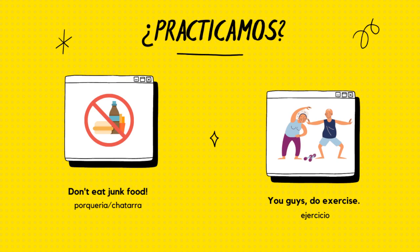Practicamos! Here I have two examples for you to try. The first one says: Don't eat junk food — and I have two words that could be substituted for junk food: porquería or chatarra. The second example is: You guys do exercise. Ejercicio is the word for exercise. Pause the video and let's see what you've got.